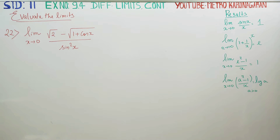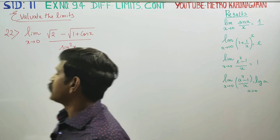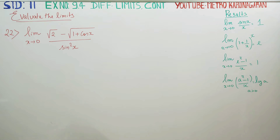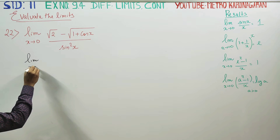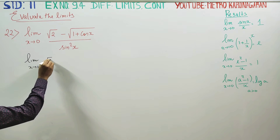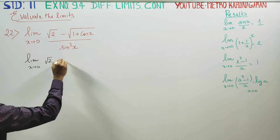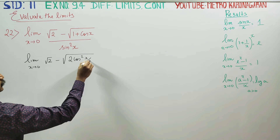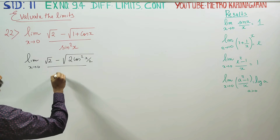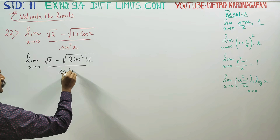Dear 11th standard students, in exercise number 9.4, sum number 22: limit x turns to 0, root x minus root of 1 plus cos x, divided by sin squared x. We rewrite as limit x turns to 0, root of 2 minus (1 plus cos x), which gives 2 cos squared x by 2, divided by sin squared x.